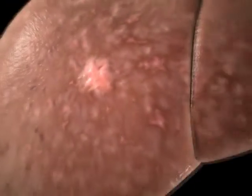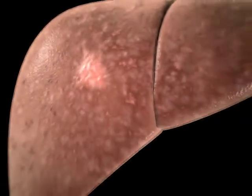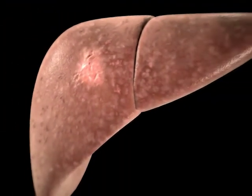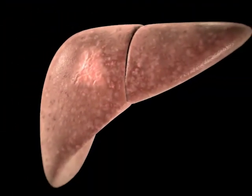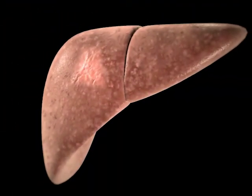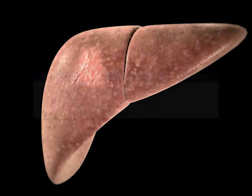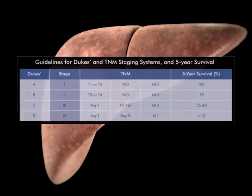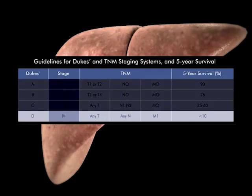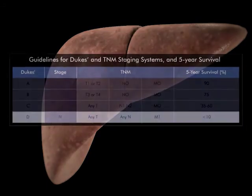Cancer cells that pass into the blood or lymphatic systems may be carried to many organs, such as the liver, where they may form secondary tumours, known as metastases.